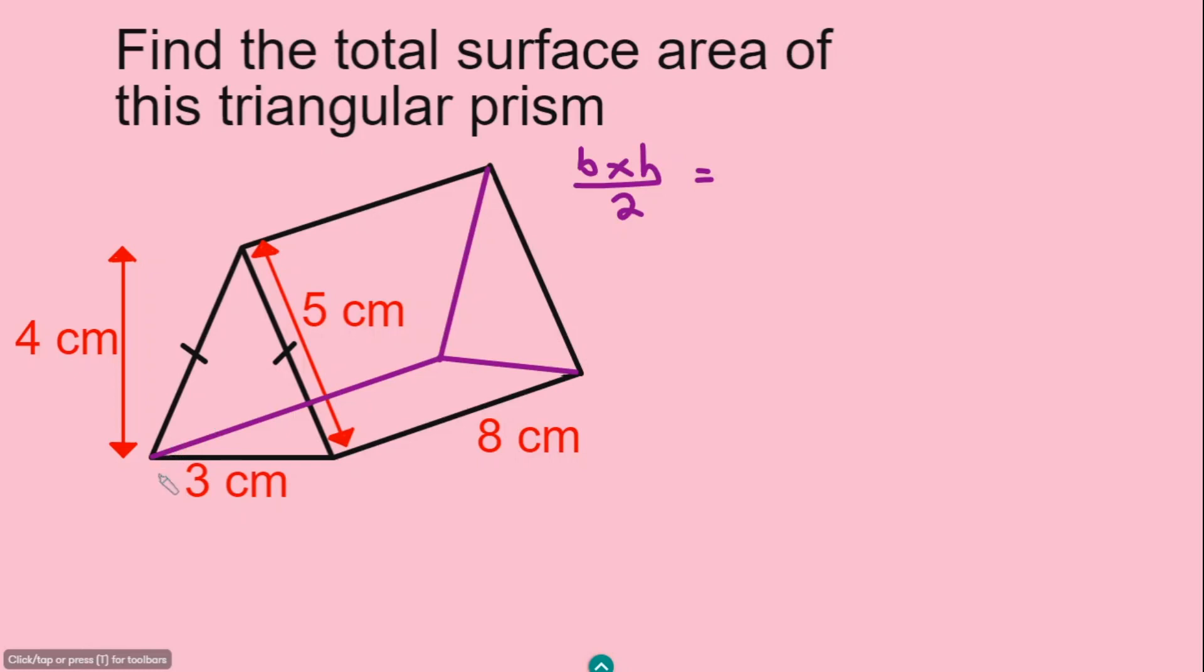Here, the base is 3 cm and the height is 4 cm, and then you divide this by 2. And if you work this out, you have 6 cm squared.